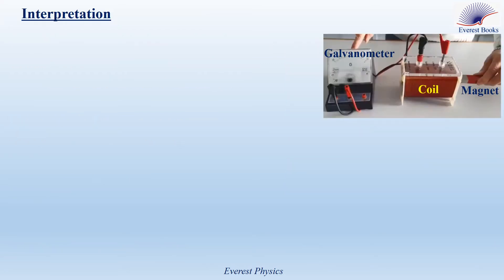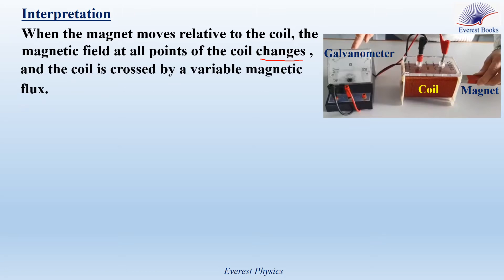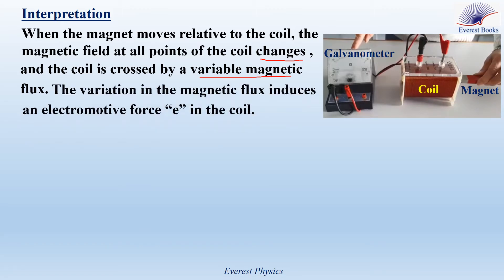Now, the interpretation of the previous experiment: why is electricity produced when we move the magnet in front of the coil? When the magnet moves relative to the coil, the magnetic field at all points of the coil changes. As we move the magnet away from the coil, the magnitude of the magnetic field decreases. As we move the magnet towards the coil, it increases. So the coil is crossed by a variable magnetic flux, and the variation in the magnetic flux induces an electromotive force E in the coil. We can conclude that when a circuit is crossed by a variable magnetic flux, an electromotive force or voltage is induced in the circuit.